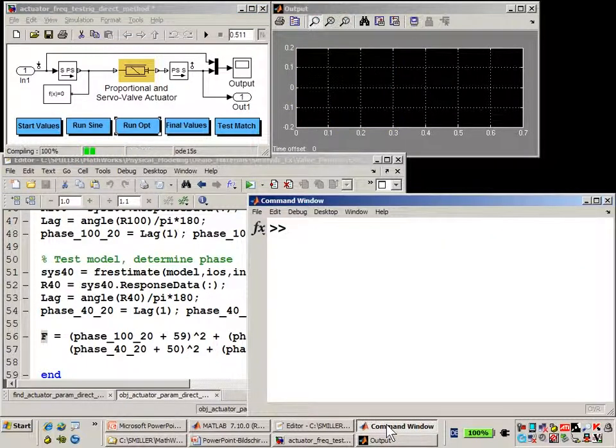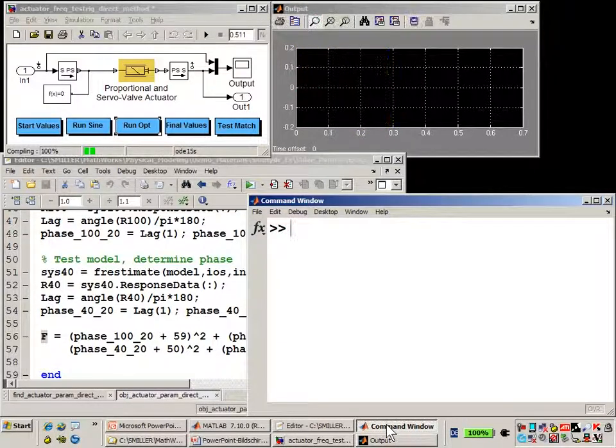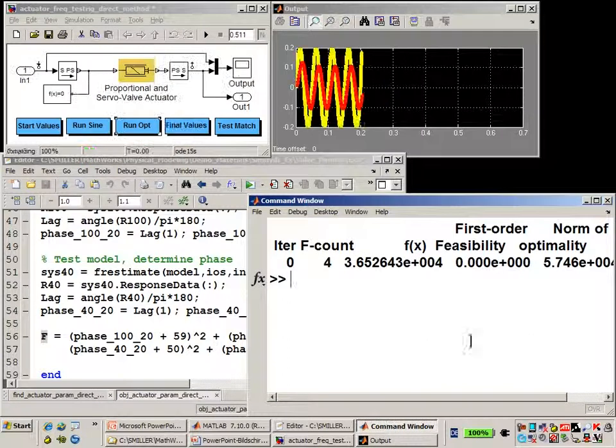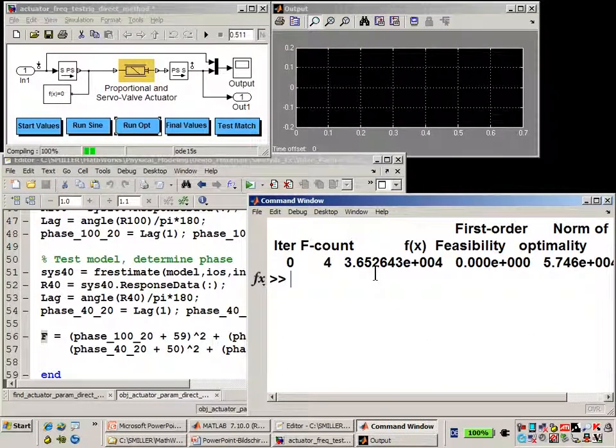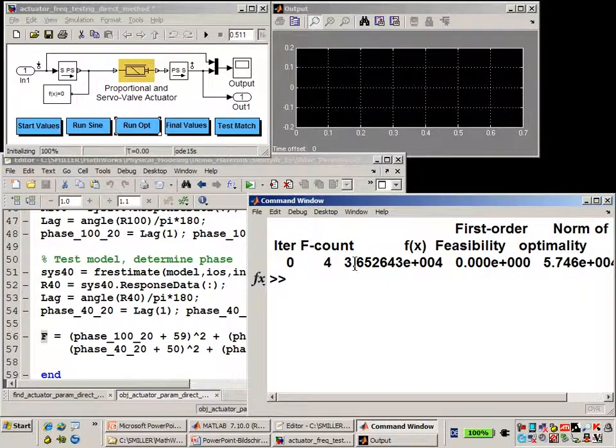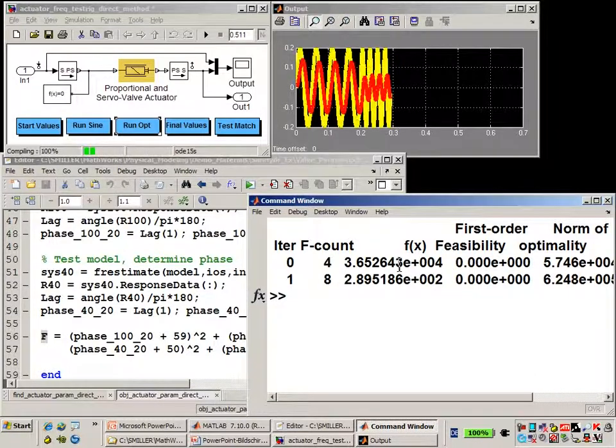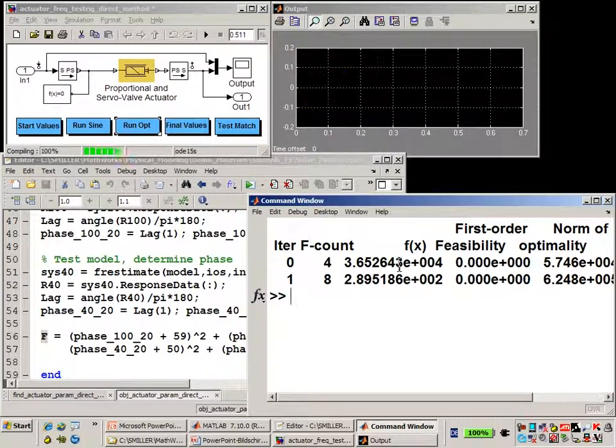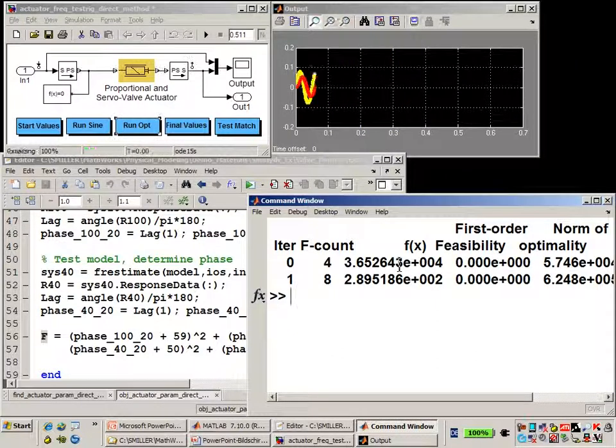In the MATLAB command window, you'll see updates from the optimization as it is running. And you can see that we have the value of the objective function here. So you can see that as the optimization runs, this value will shrink as fmincon manages to reduce the value of f or bring the frequency response closer to the values from the data sheet.